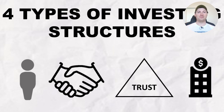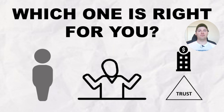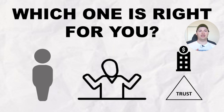In the last video — which I'll leave a link for here — we ran through the four structures you can use to purchase real estate in Australia. We also ran through, right at the end of the video, an introduction to trust structures and combination structures that give you a little bit more borrowing leverage and flexibility. In this video I'm going to show you how the difference between buying as an individual versus buying in a trust structure can make to your portfolio, and how you can leverage this to get more real estate than you thought was possible.